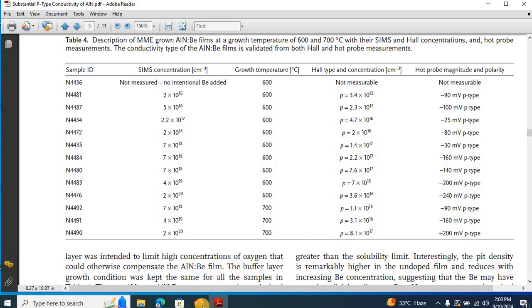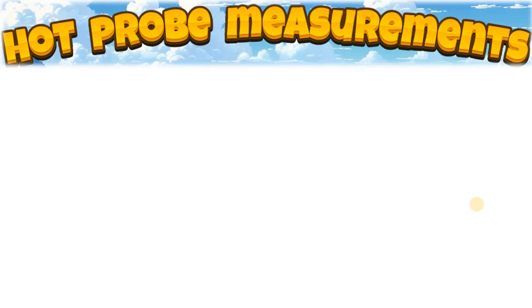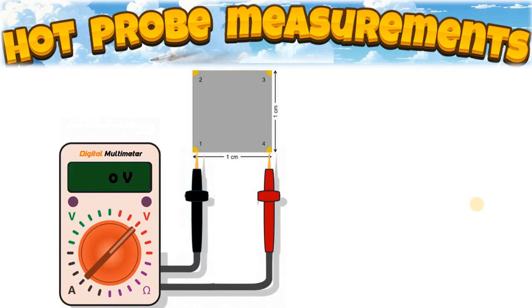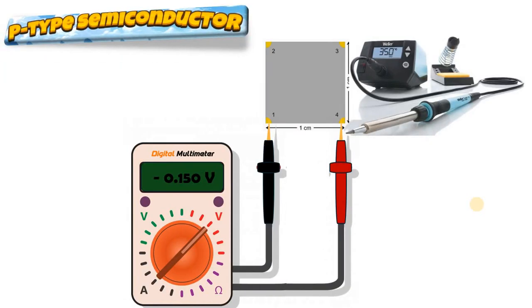So in conclusion, the hot probe measurement is a powerful yet simple technique to determine the doping type of a semiconductor. By creating a temperature gradient and observing the thermoelectric response, we can easily identify whether the material is N-type or P-type based on which type of carrier, whether it's electrons or holes, dominates.